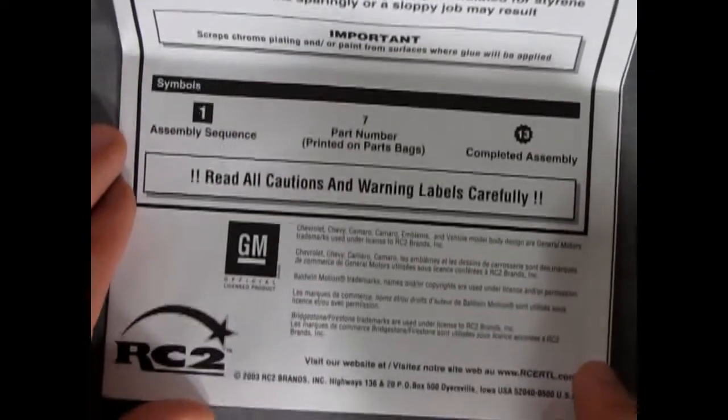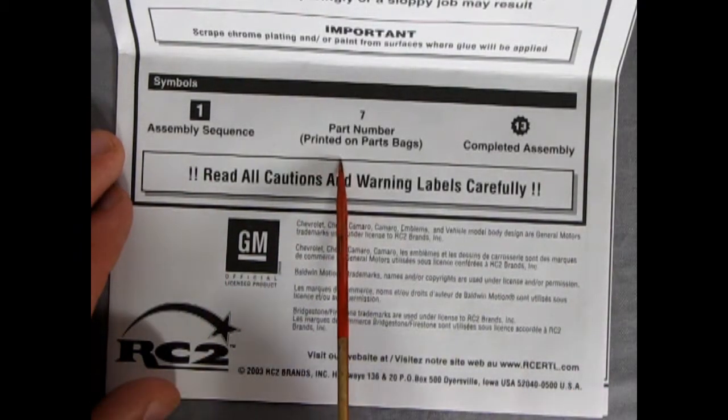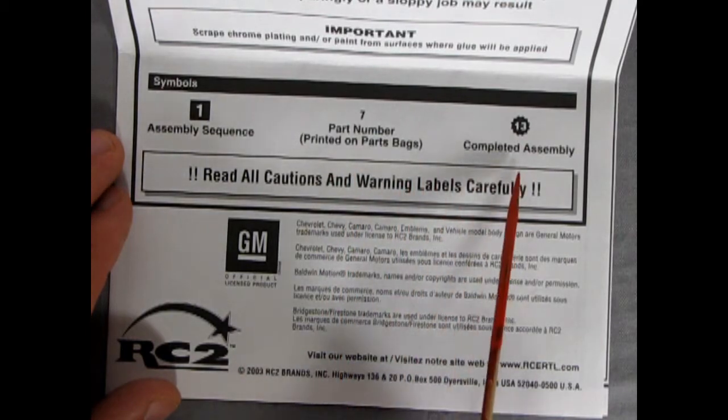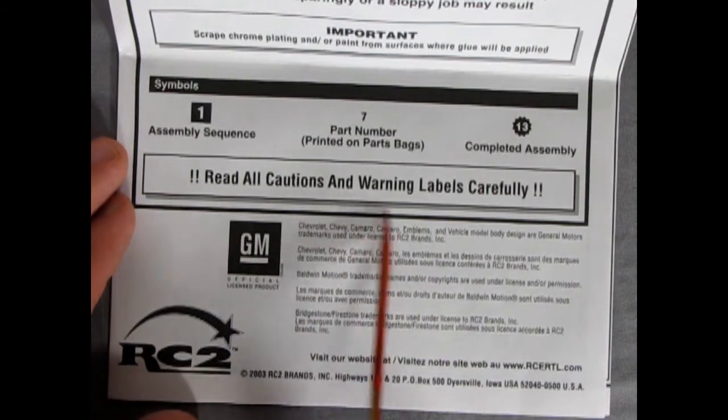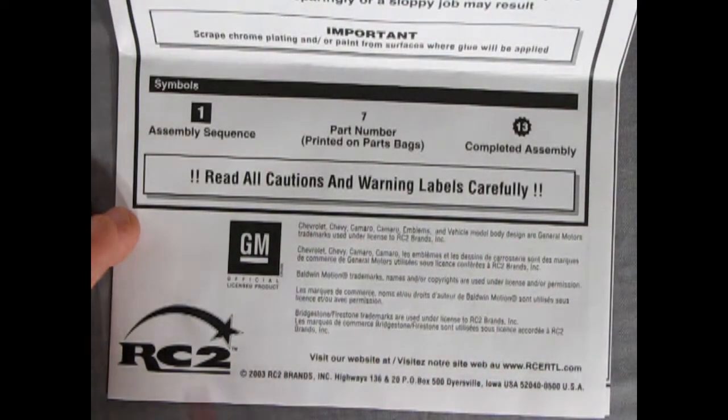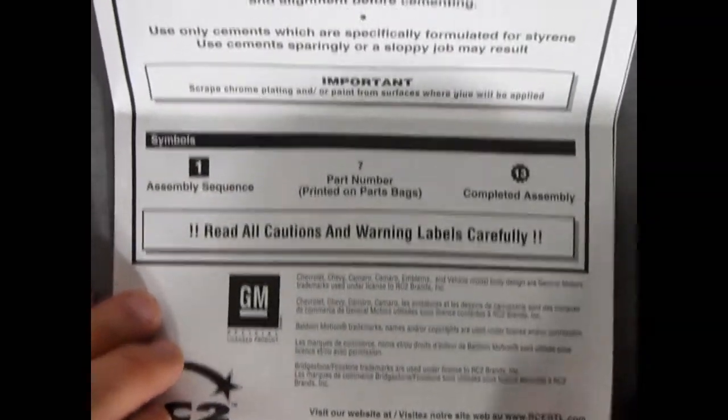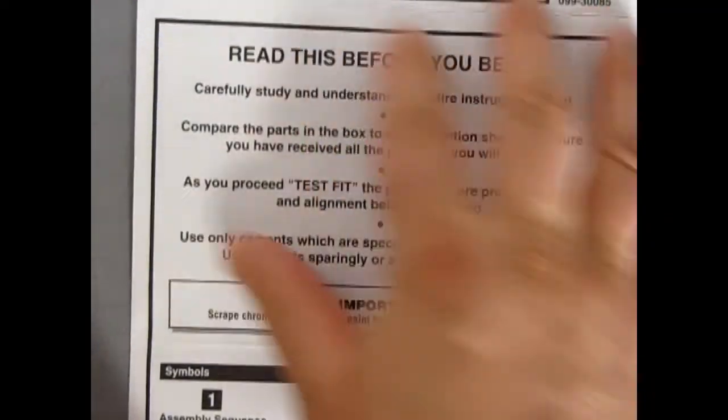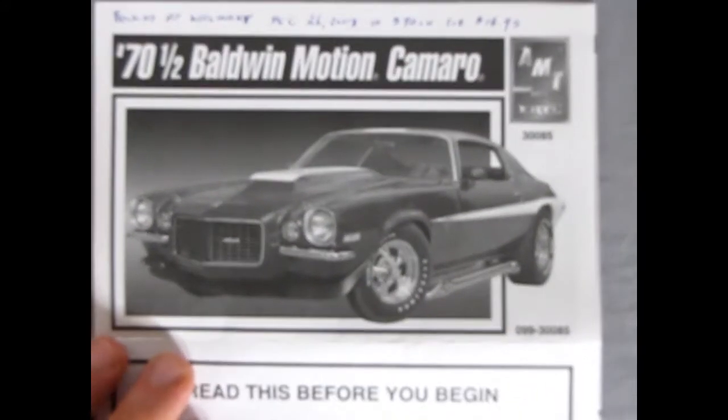And then here we get a little description of what the symbols are. So, one is assembly sequence. An open number is part number printed on parts bag. And a star is a completed assembly. Read all cautions and warning labels carefully. Registered by GM, RC2, and all that stuff. And I do believe this Camaro was actually made by the original AMT crew before they were replaced at RC2.